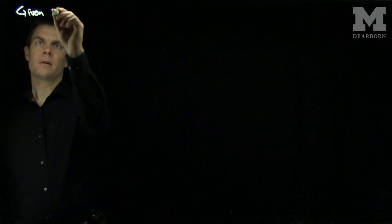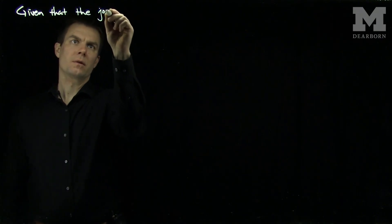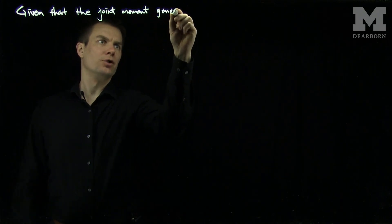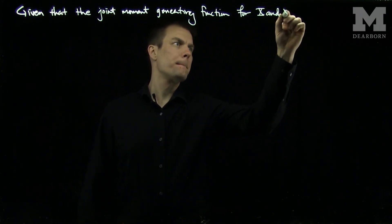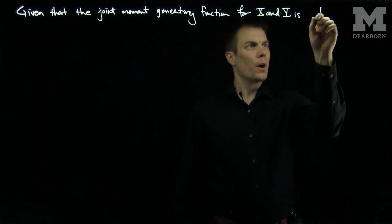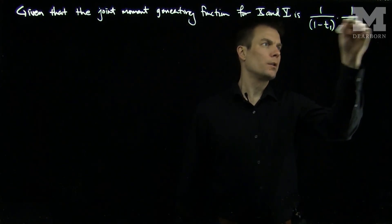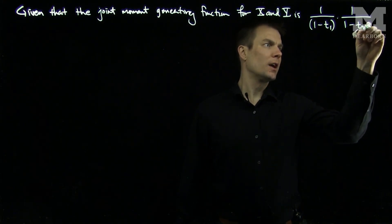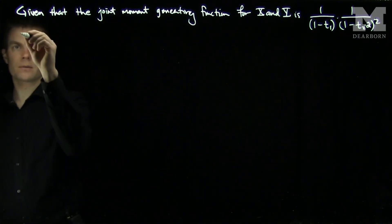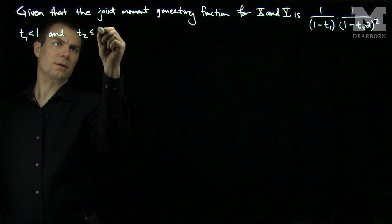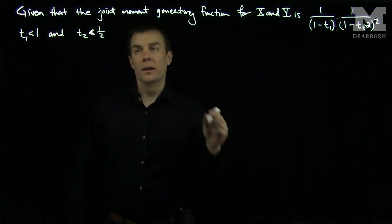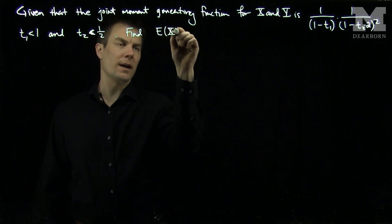Hello students. In this video we'll see an example of how to find the expected value of the product of two independent random variables given their moment generating functions. Given that the joint moment generating function for x and y is 1 over (1 minus t1) times 1 over (1 minus 2*t2) squared, where t1 is less than 1 and t2 is strictly less than a half, let's find the expected value of x times y.